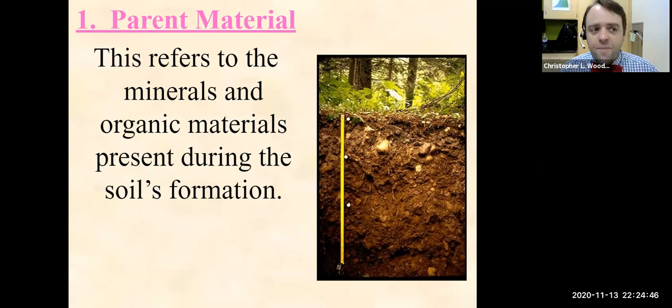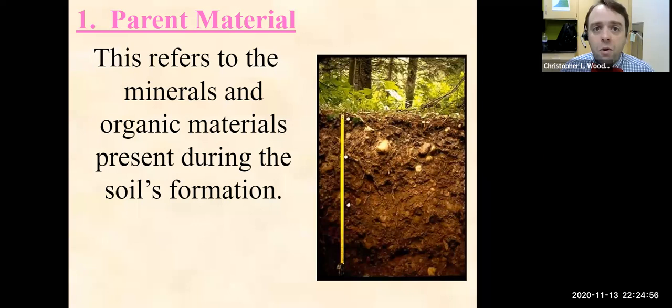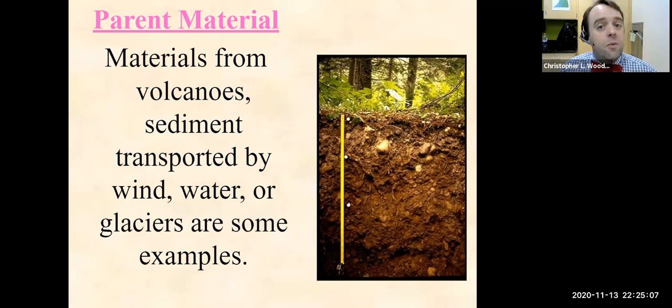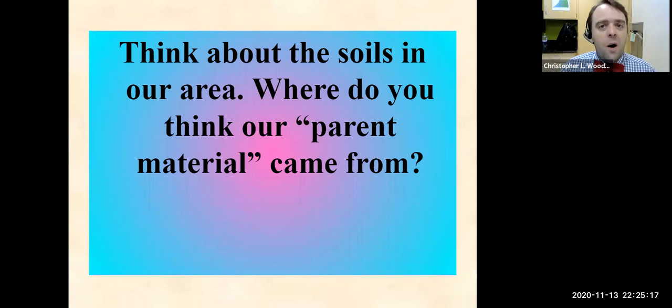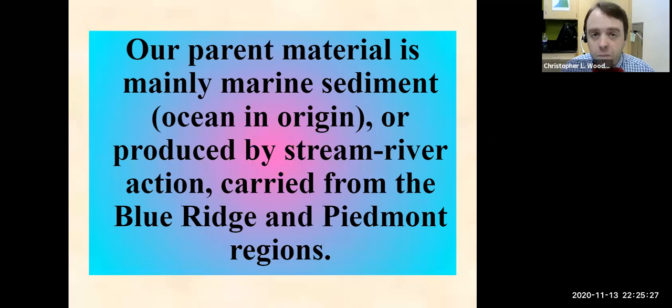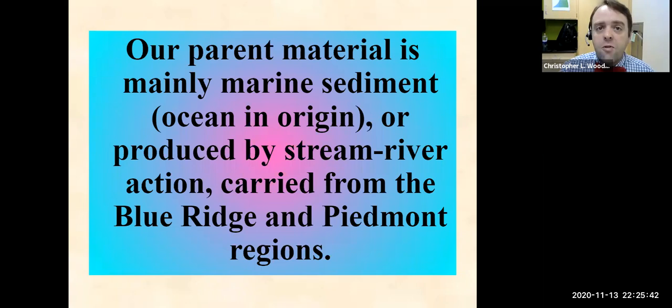It's going to be quite different in a Hawaiian island volcanic oceanic hotspot versus a continental hotspot. The silicate material and the rocks are going to be different, so the parent material's mineral content will differ based on whatever that rock material is. Materials from volcanoes, sediment transported by wind, water, or glaciers all influence that parent material. Our parent material here is mainly marine sediment — ocean in origin — or produced by river and stream erosion and transportation from the Blue Ridge and Piedmont.